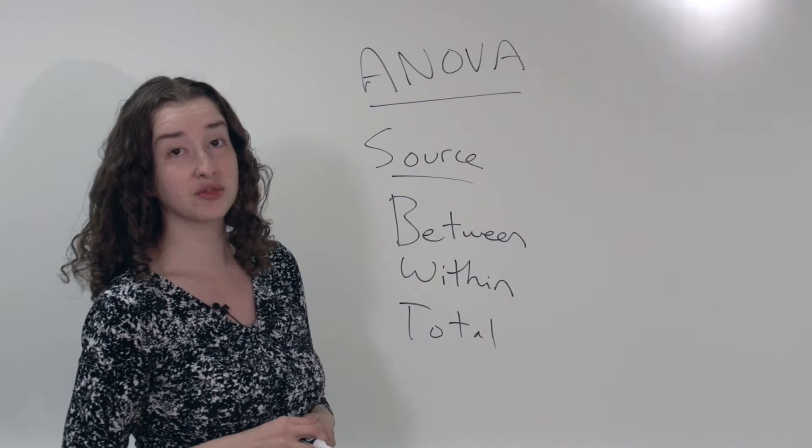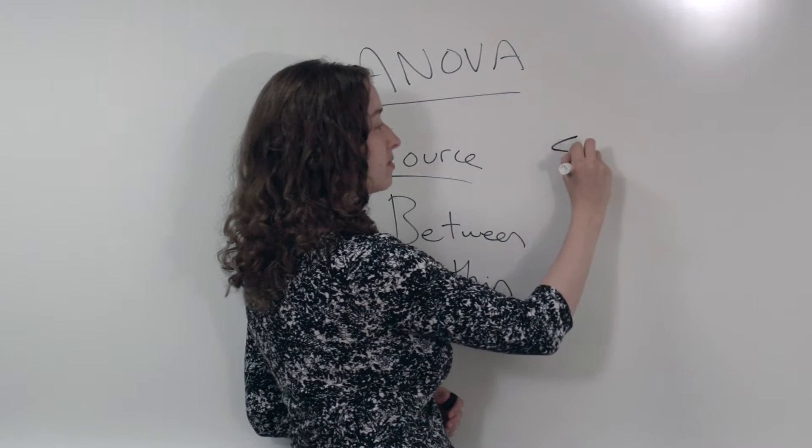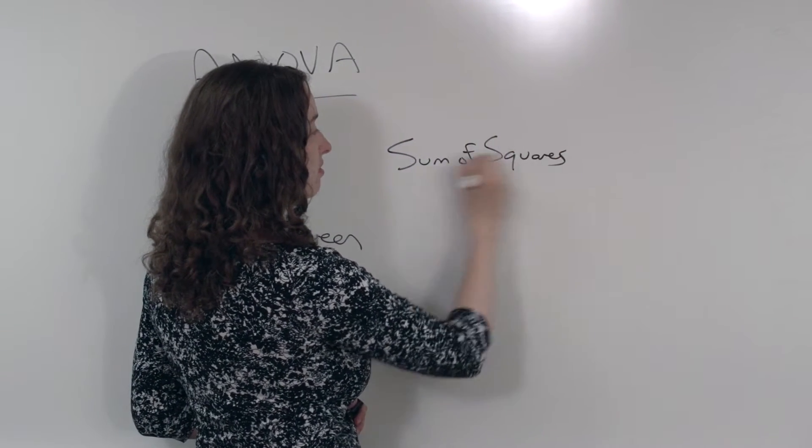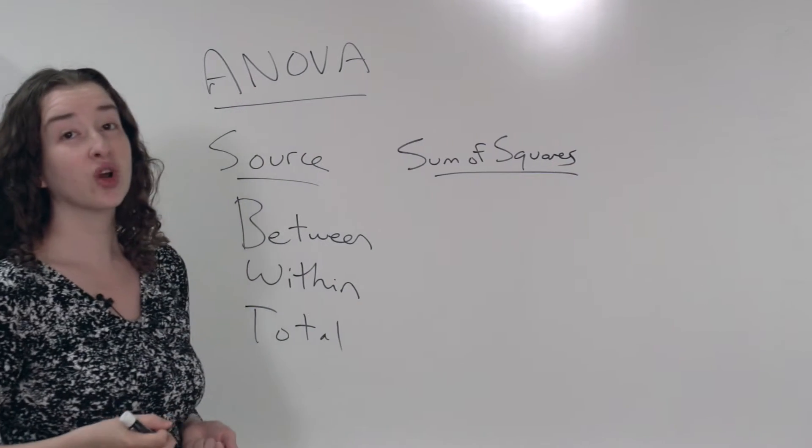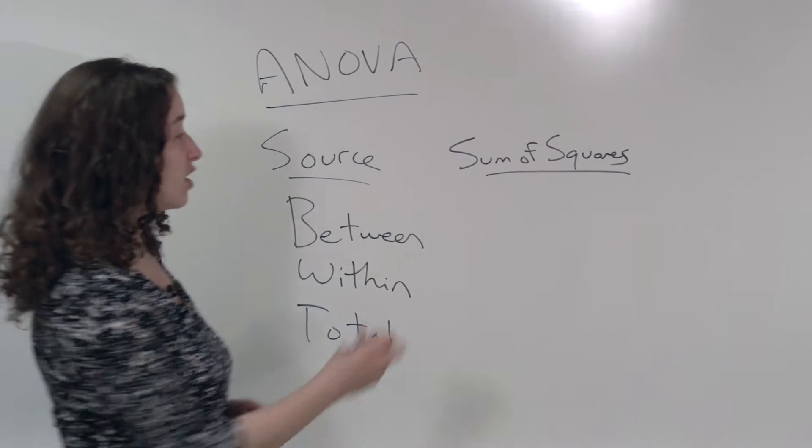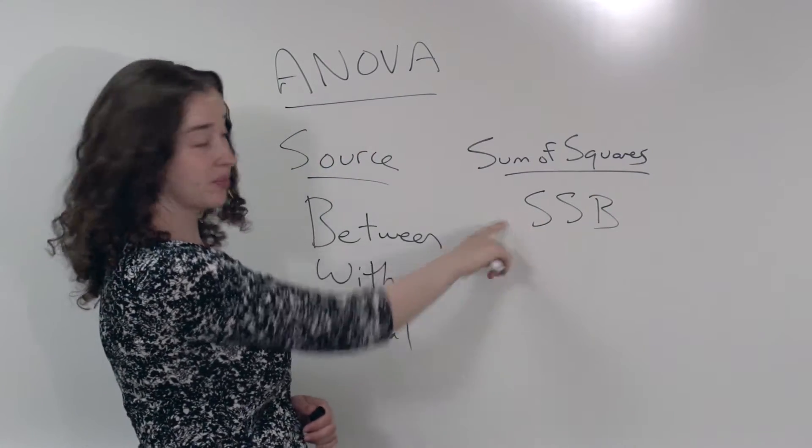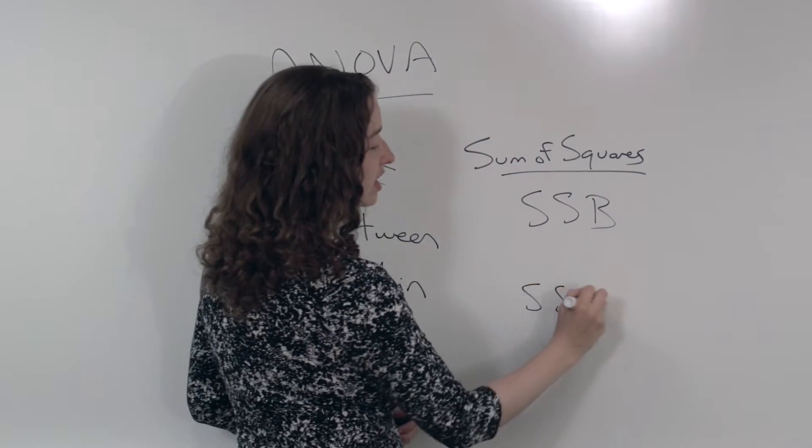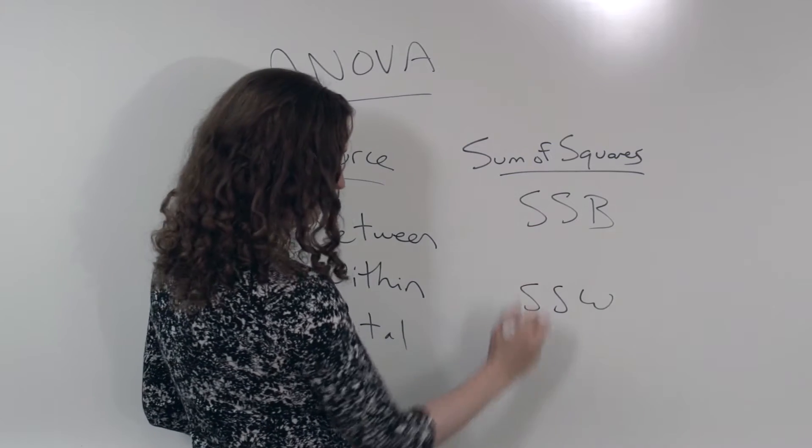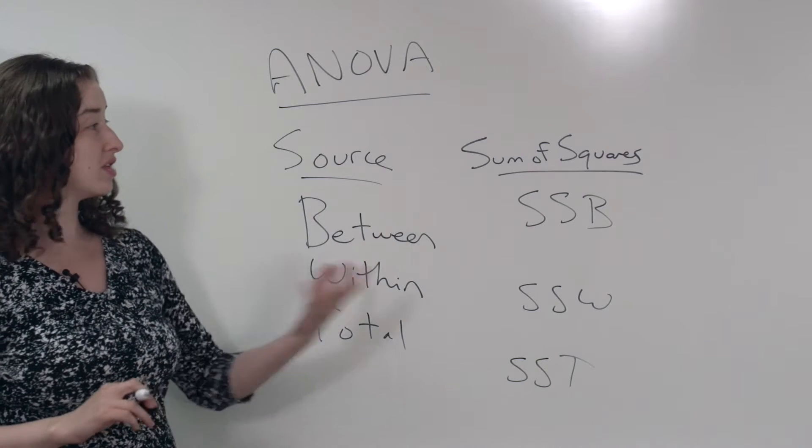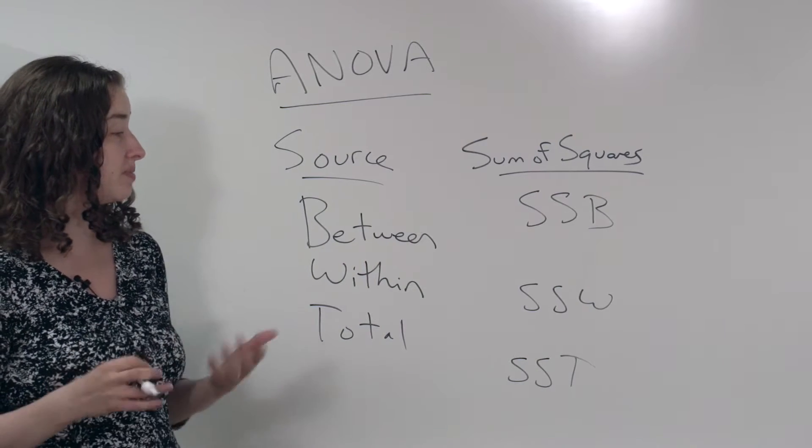The next column I'm going to label sum of squares. And this is where we record the quantities that we've been discussing. Whatever the sum of squares between is, that's where we're going to put it. Whatever the sum of squares within is, that's where we're going to put it. And the sum of those two, the sum of squares total, that's where we're going to put it.